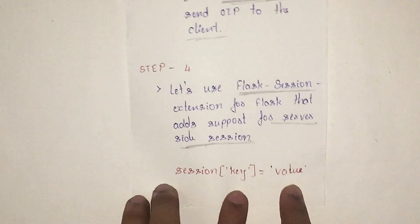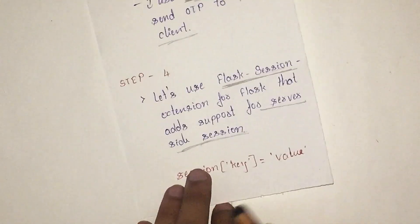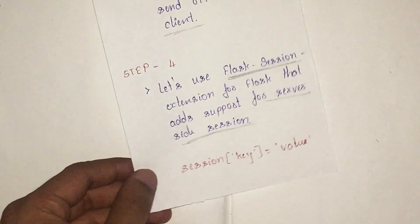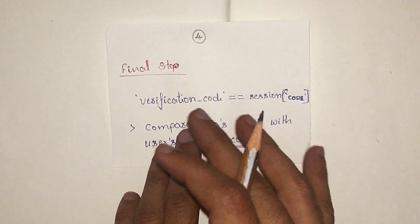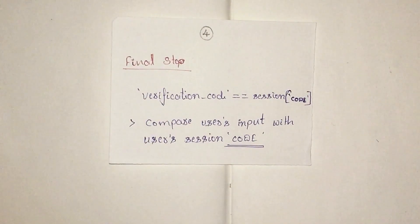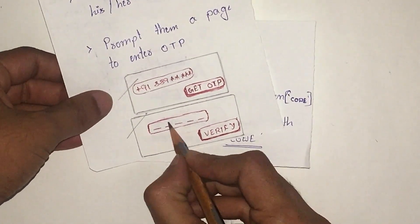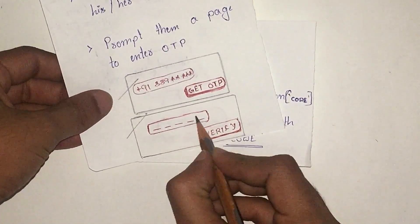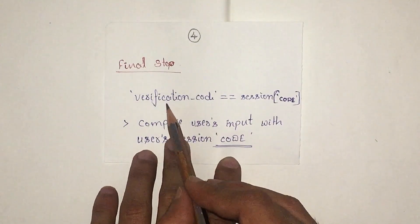The final step: the verification code has been received to the end user. Now he will type, as I have shown you in step one, he will enter the OTP that we have sent to his SMS and click on verify. In this verify, I am going to collect whatever he enters through request.